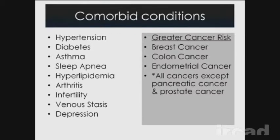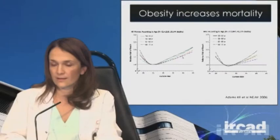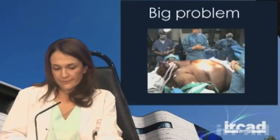Comorbid conditions such as hypertension, diabetes, asthma, sleep apnea, high cholesterol, arthritis, infertility, and depression are very often associated with morbid obesity — and also cancer. You have a higher risk of breast cancer, colon cancer, endometrial cancer, and basically all cancers except pancreatic and prostate. Looking at curves showing how obesity decreases life expectancy, the BMI is plotted against the relative risk of death for men and women — the more the BMI increases, the less you live. So we have a very big problem.